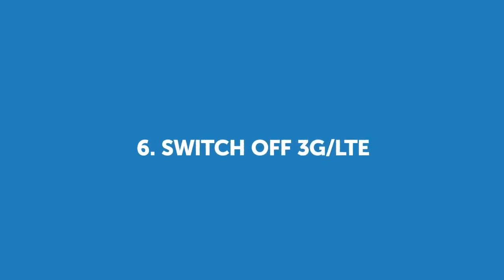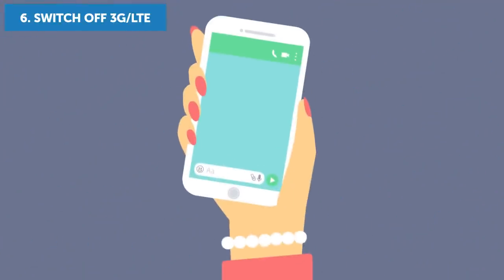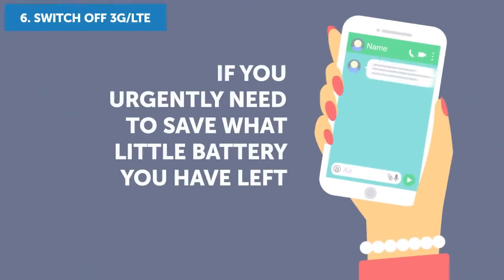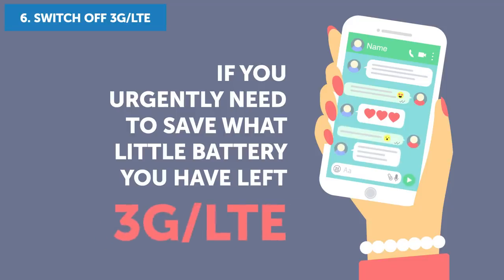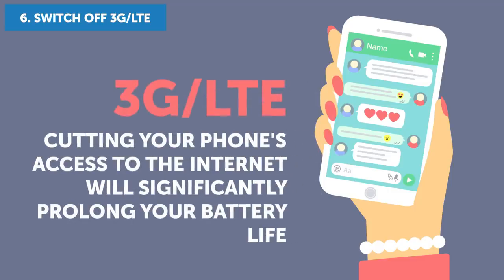6. Switch Off 3G LTE. If you urgently need to save what little battery life you have left, switch off not only Bluetooth, Wi-Fi and similar features, but 3G LTE as well. Cutting your phone's access to the internet will significantly prolong your battery life.